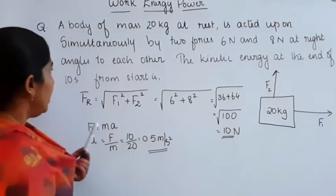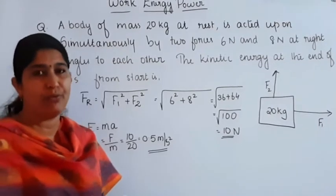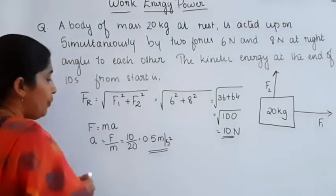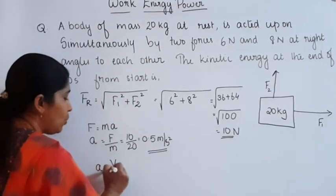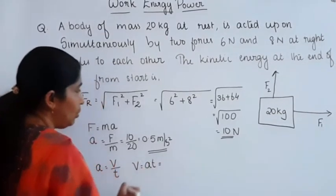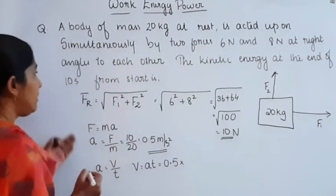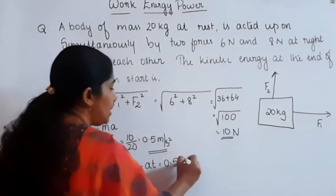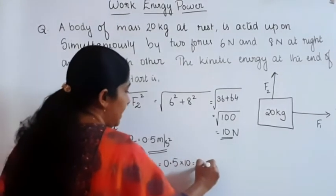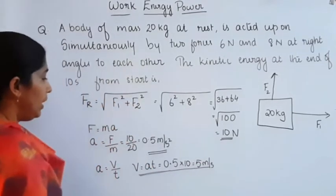Now we want to find the kinetic energy of the system. The equation for kinetic energy is half MV². We need to find the velocity. Acceleration A equals velocity divided by time, so velocity V equals acceleration into time. That is 0.5 into 10 seconds, which equals 5 meter per second.